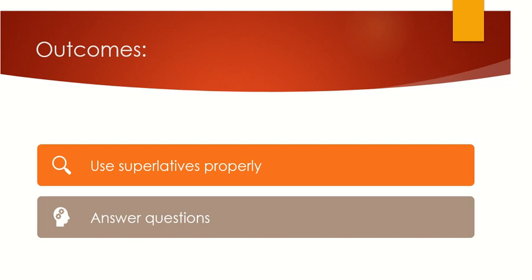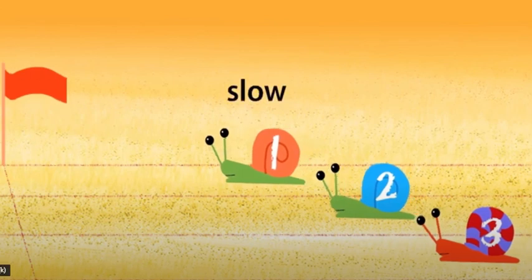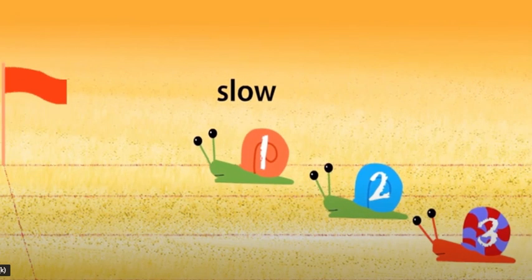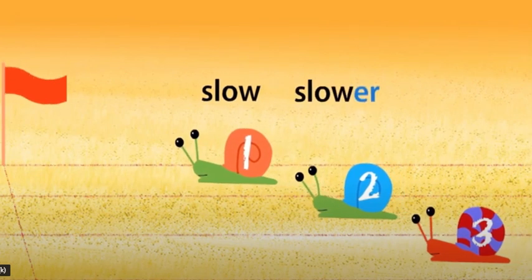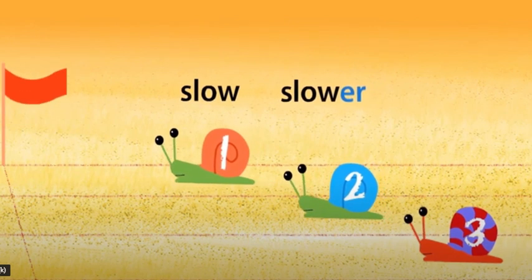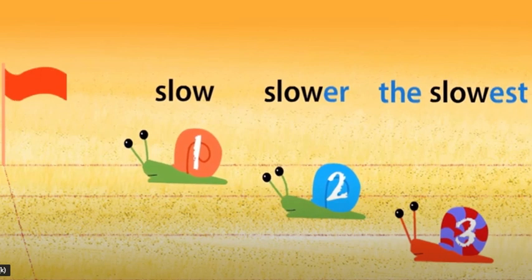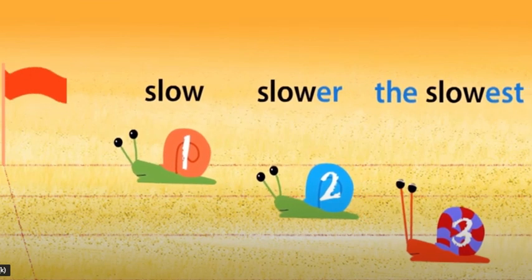Now look at these amazing snails — they are so wonderful. We have three snails. The first snail is slow. The second snail is slower than the first snail. But look at the third snail — it is the slowest. But it is the prettiest. Look at the slowest snail; it is the prettiest.